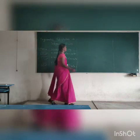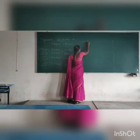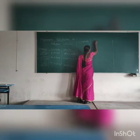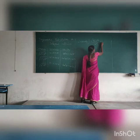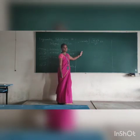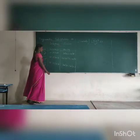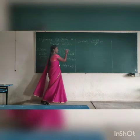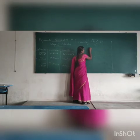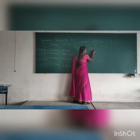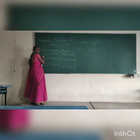Now we are going to move to the problem. Evaluate the integral of root of 9 minus x squared divided by x squared, with respect to x. In the numerator we have root of 9 minus x squared, which is of the form root of a squared minus x squared, comparing root of 9 minus x squared with root of 3 squared minus x squared. So the value of a is equal to 3.